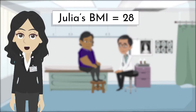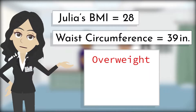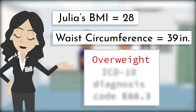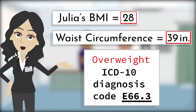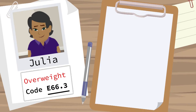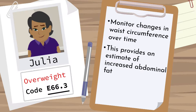Julia's BMI is 28 and her waist circumference is 39 inches. Based on her anthropometric data, Julia is considered overweight, which is ICD-10 diagnosis code E66.3. A high waist circumference is associated with an increased risk for type 2 diabetes, dyslipidemia, hypertension, and cardiovascular disease in patients with a BMI ranging between 25 and 34.9 kg/m². Monitoring changes in waist circumference over time may be helpful in addition to measuring BMI, since it can provide an estimate of increased abdominal fat even in the absence of a change in BMI.